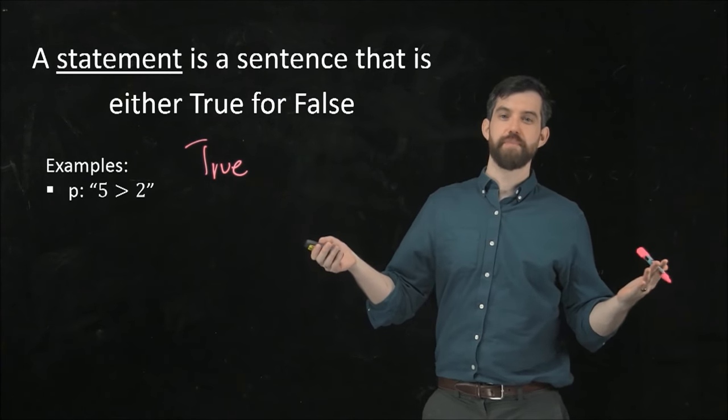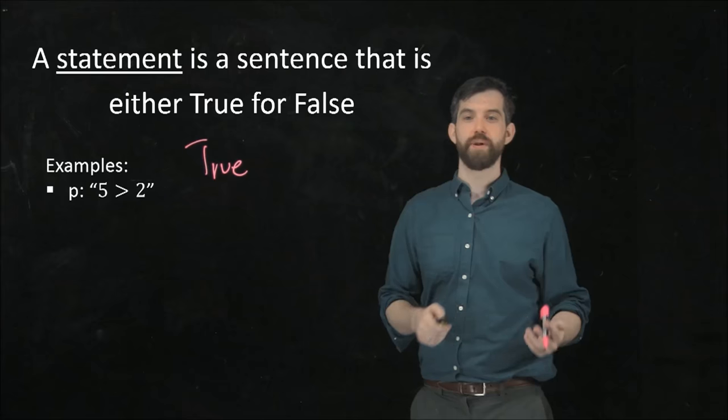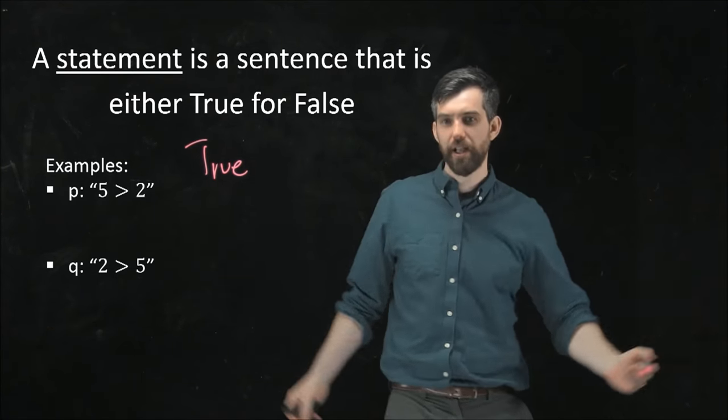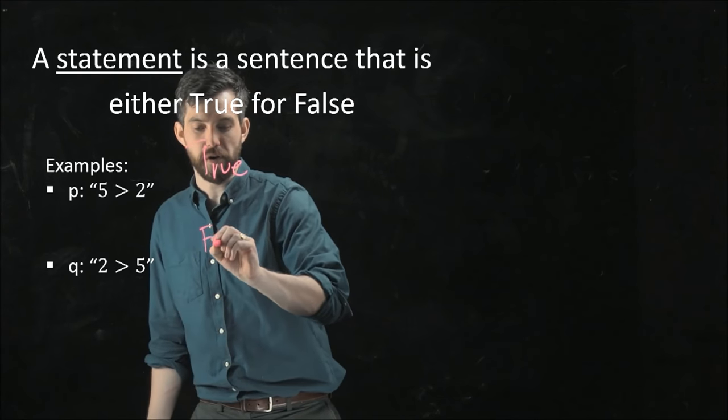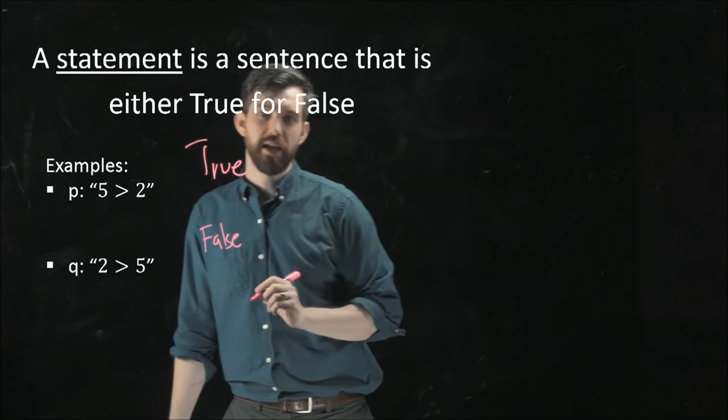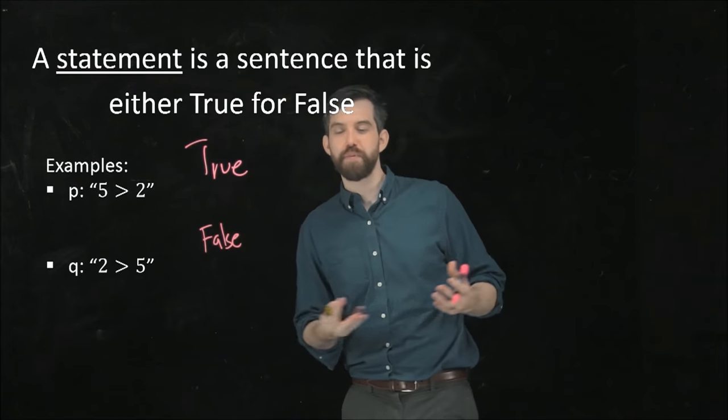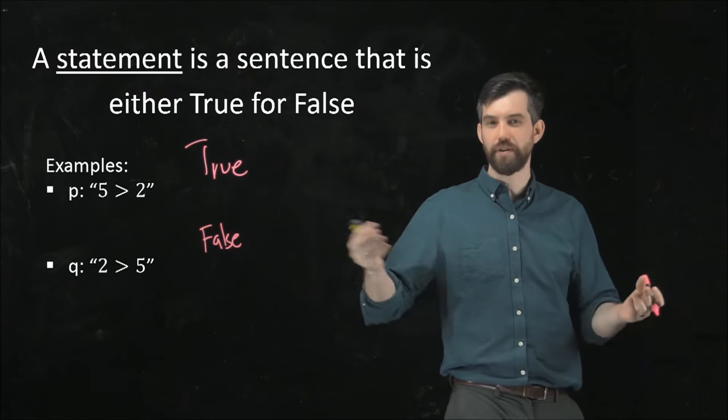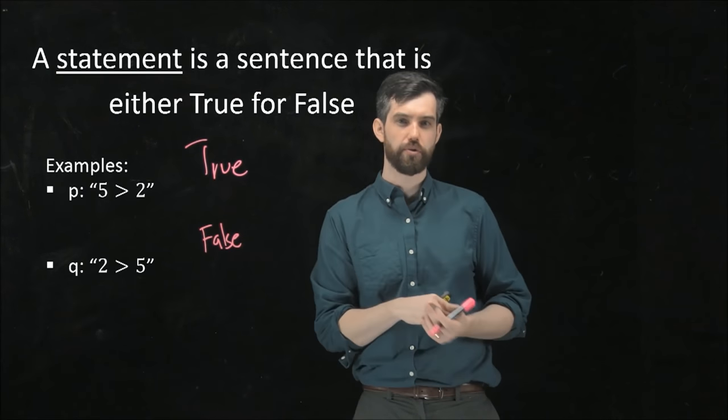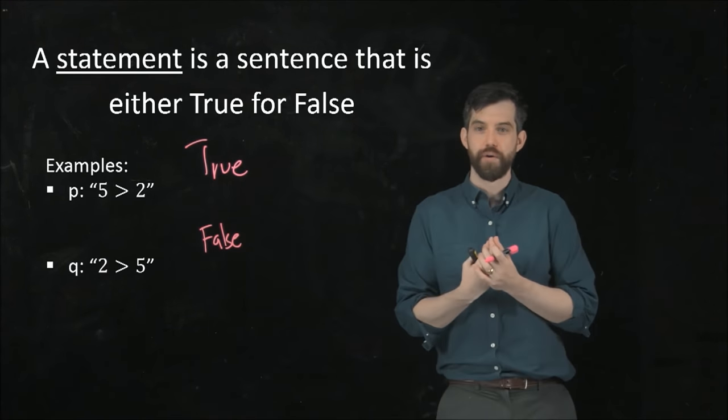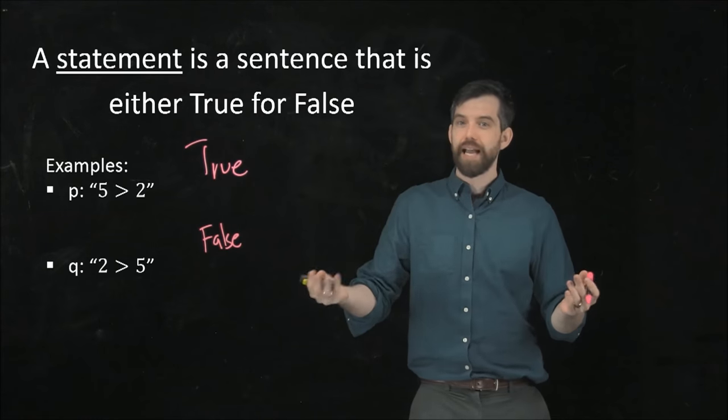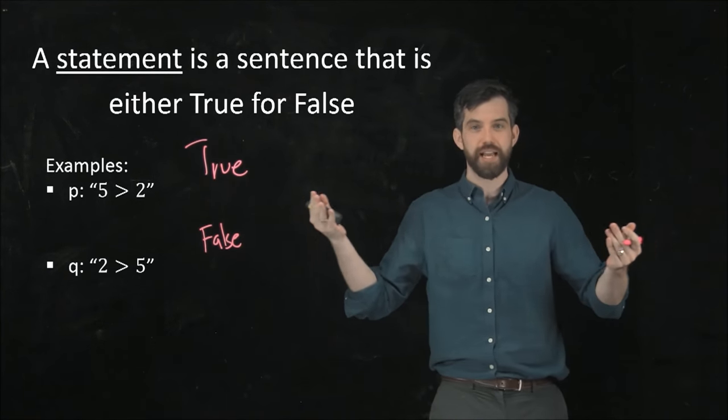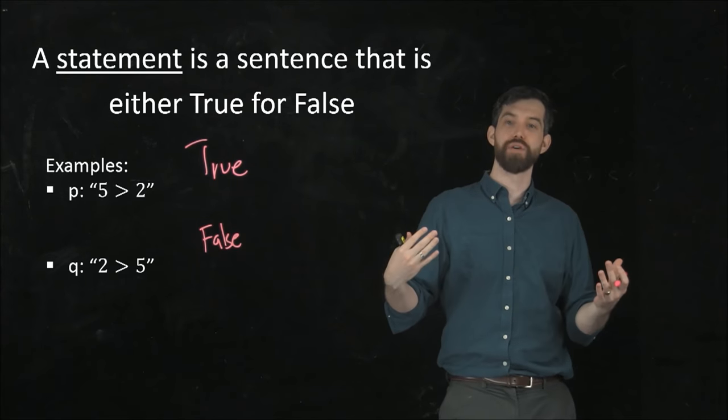We can also write down statements that are false. For example, the statement that 2 is greater than 5. We know this is not true. This is a false statement. It's worth noting sometimes people feel uncomfortable writing down false statements in mathematics. But there's nothing wrong with this. I can write down that 2 > 5. I'm wrong to write so, or this statement is false. But it is a grammatically correct sentence. I can write it down. It's just that its truth value is false.